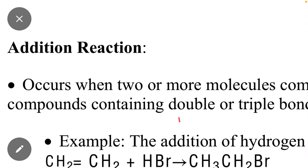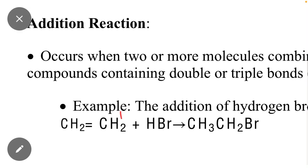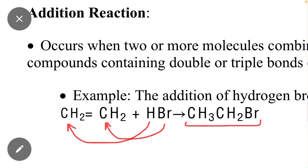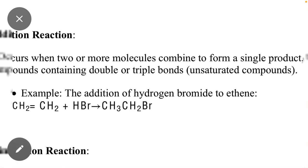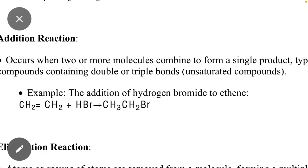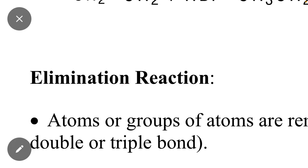The second type is addition reaction. The necessary condition is that a multiple bond must be present in the reactant. For example, in ethene we can add HBr or HCl. If we add HBr, H adds on the left side and Br adds on the right side to form a single product. This occurs when two or more molecules combine to form a single product. The reactant must be an unsaturated compound with a double or triple bond.